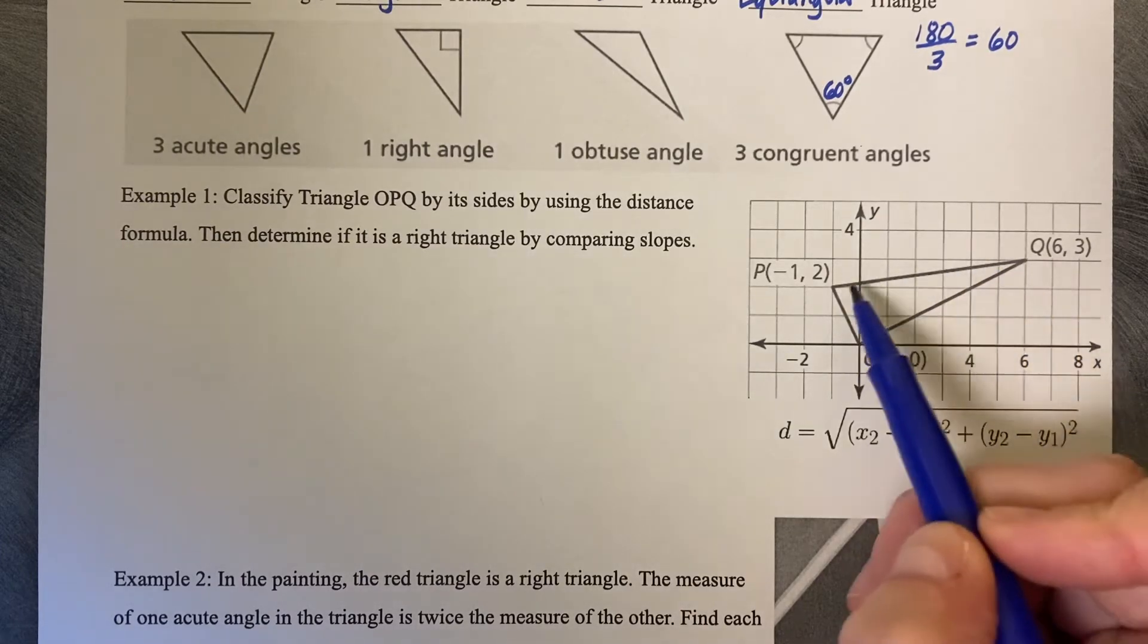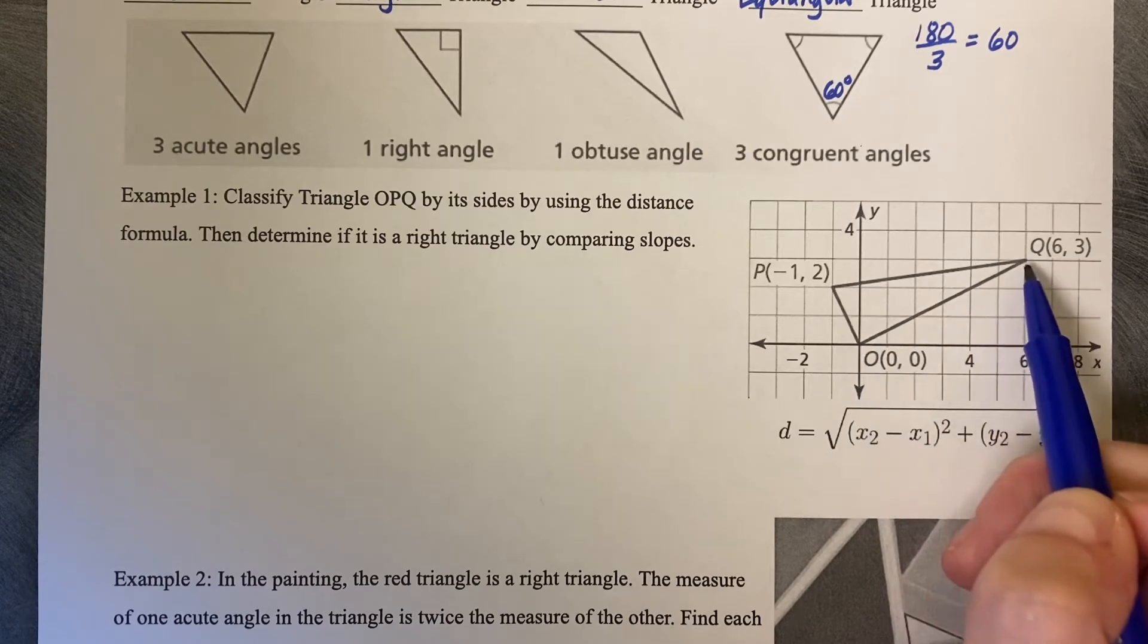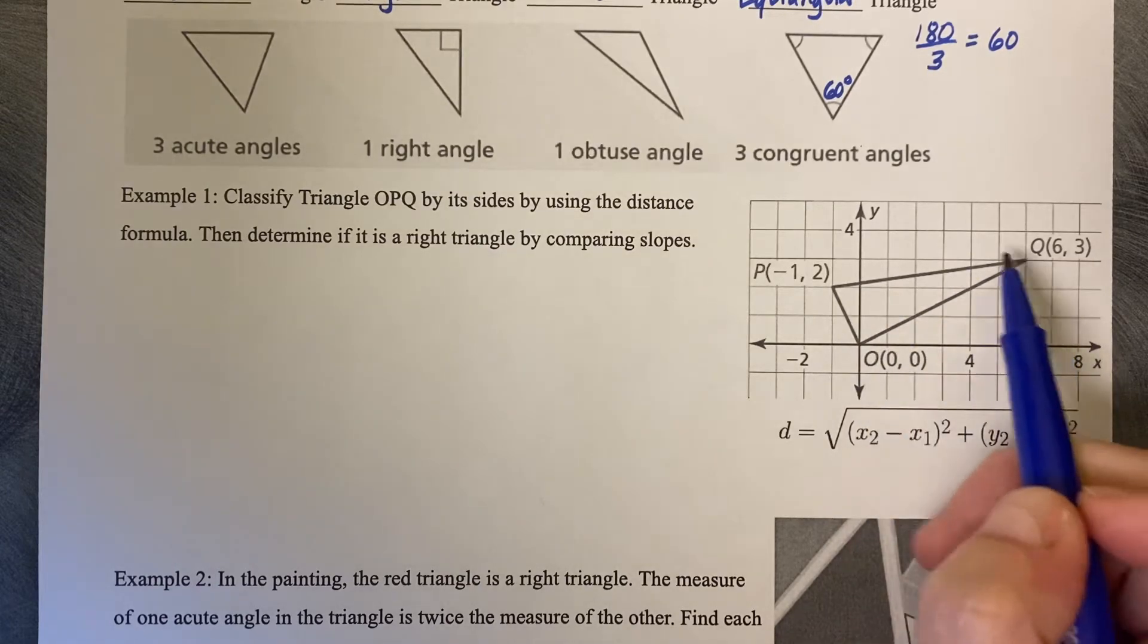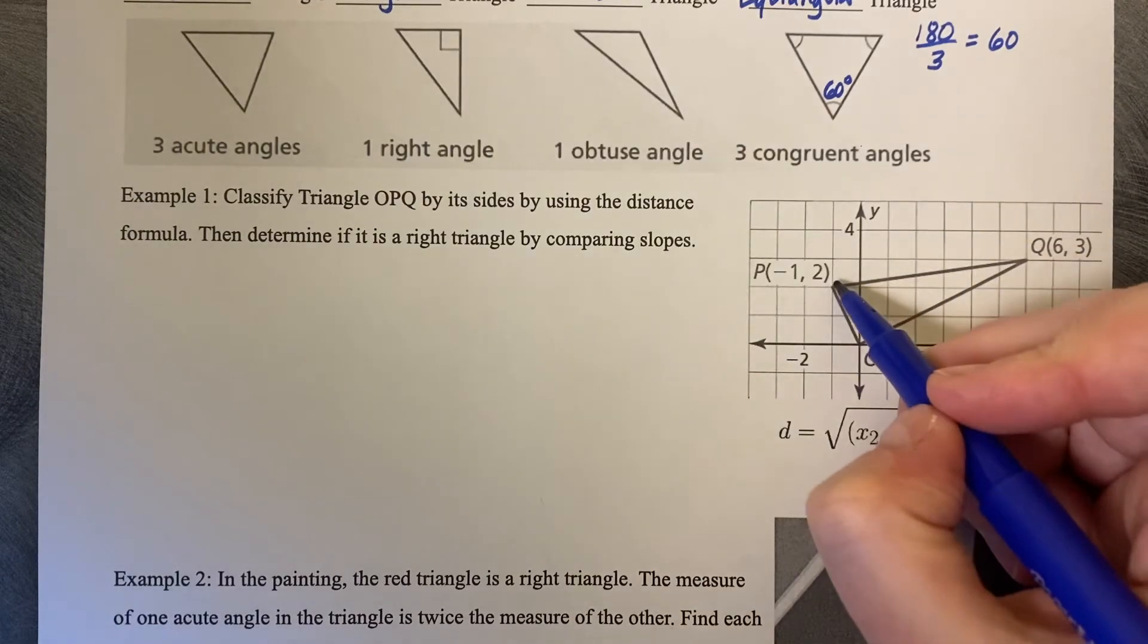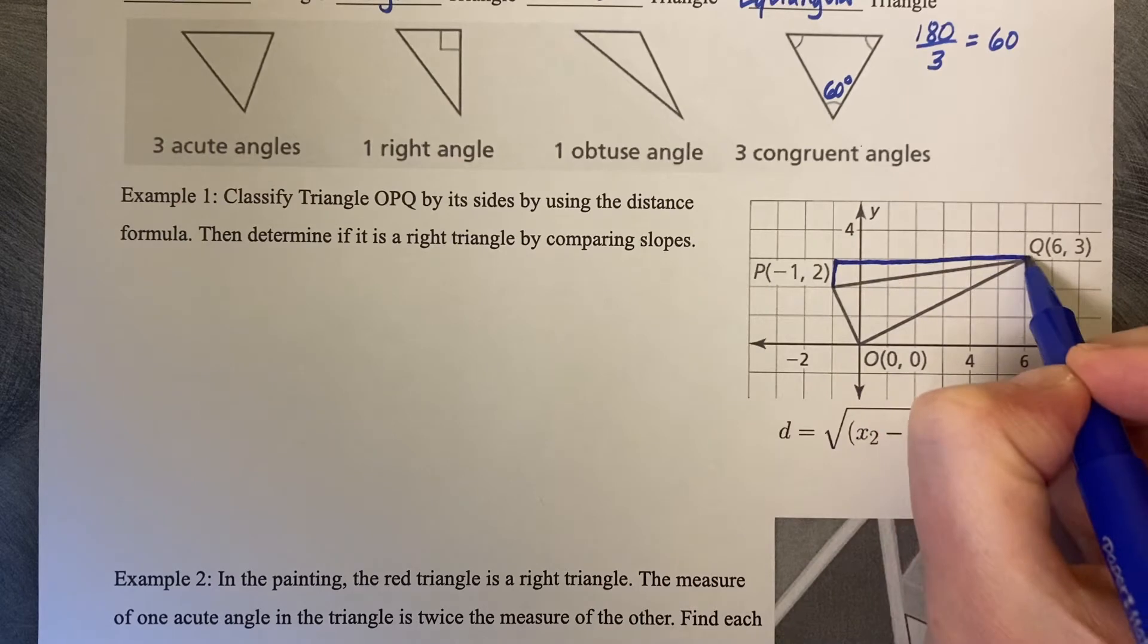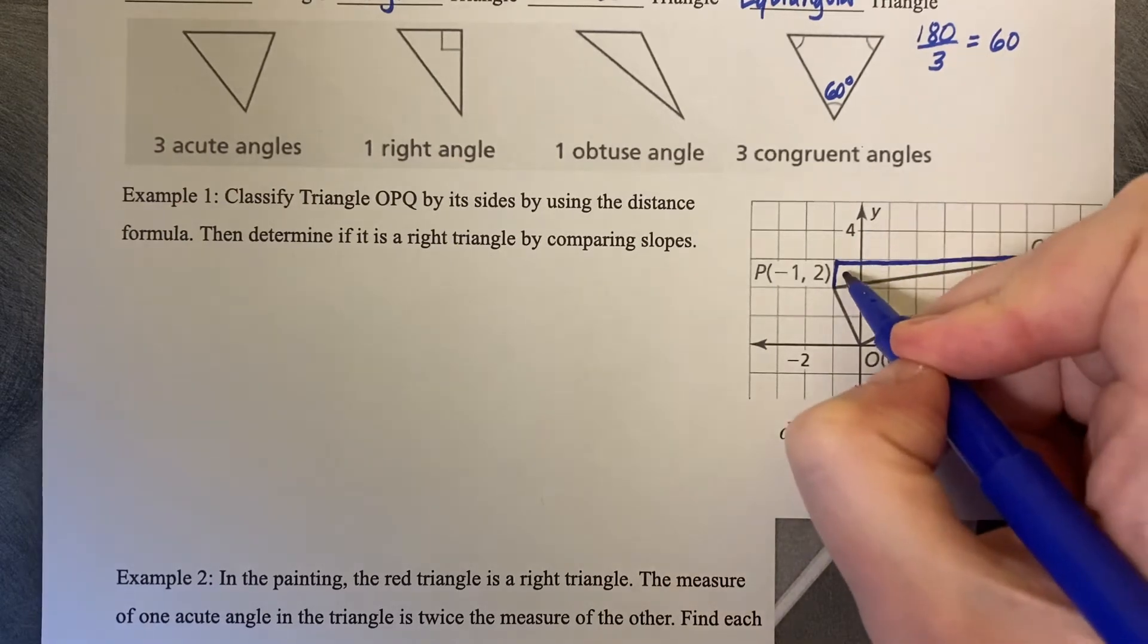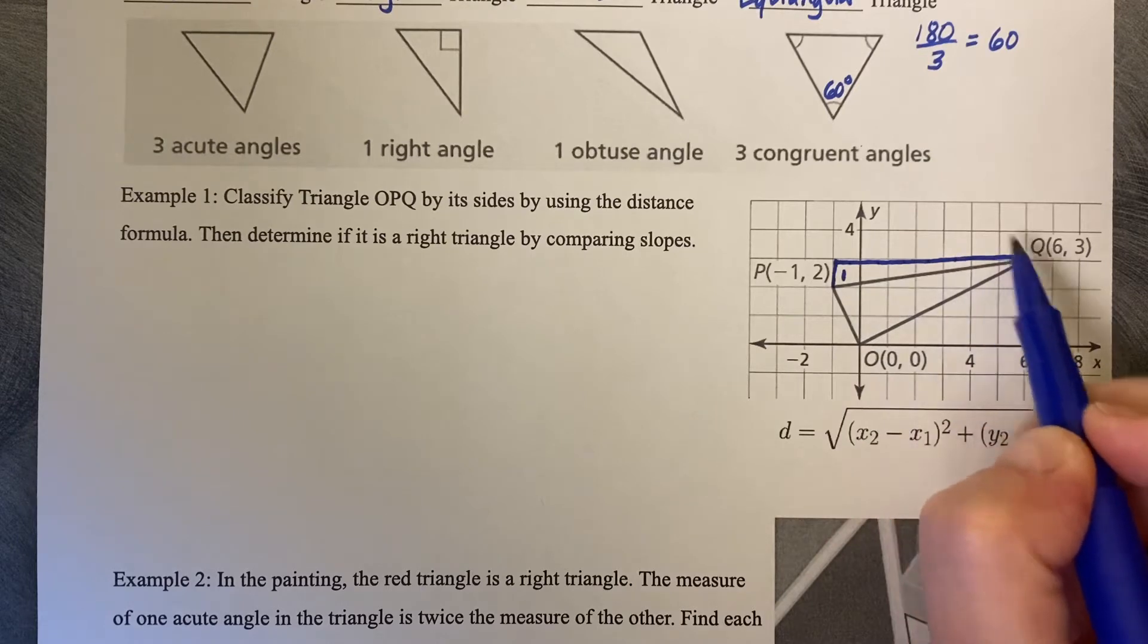So the two side lengths that I'd really like to compare are PQ and OQ. What you can do on the diagram, especially if you have a grid, is you can draw in what the slope is. So the slope of this from P to Q is rise one and run one, two, three, four, five, six, seven.